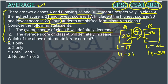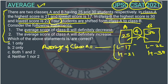Consider the following statement: the average score of Class B will definitely decrease. From the formula of average, the average of Class A will be the sum of scores of all 25 students divided by 25. It will include the lowest score of 17 and the highest score of 21.